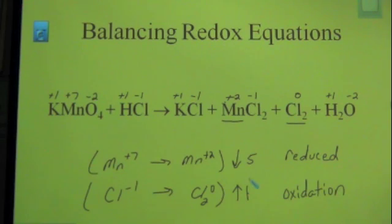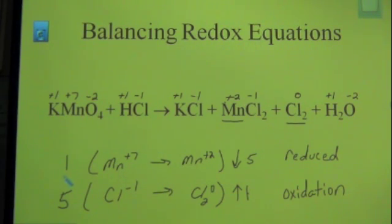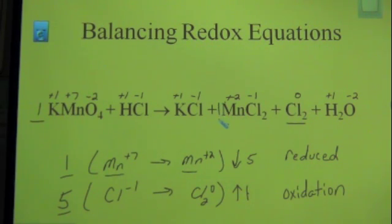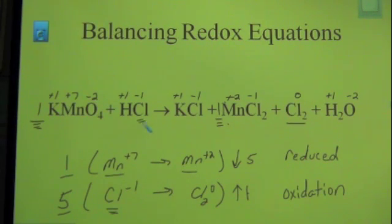To balance the electron transfer, I multiply the chlorine change by 5 and the manganese change by 1, because 5 electrons lost equals 5 electrons gained. I use these numbers as coefficients: a coefficient of 1 in front of the manganese with plus 7, a coefficient of 1 in front of manganese with plus 2, a coefficient of 5 in front of the chlorine at negative 1 on the left-hand side, and a coefficient of 5 in front of Cl2 on the product side.